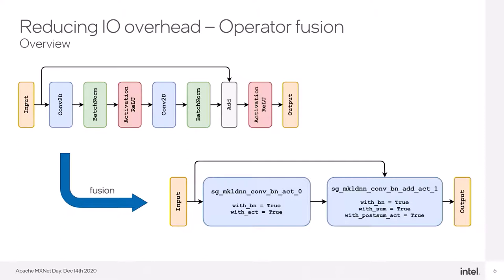Operator fusion is nothing else but replacing two or more subsequent operators with a single one combining all their functions. Thanks to this, we can get rid of MXNet engine overhead between operator calls and reduce memory read and write operations. It is because CPU can now compute, for example, convolution and immediately apply activation on a resulting value.